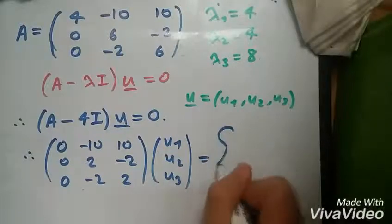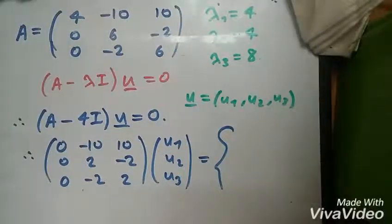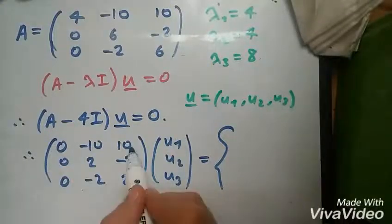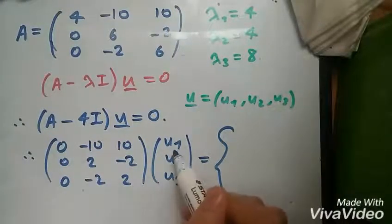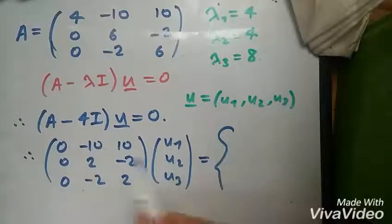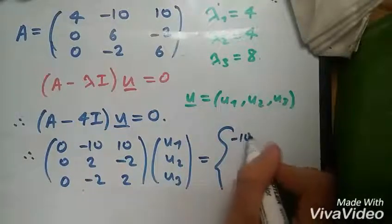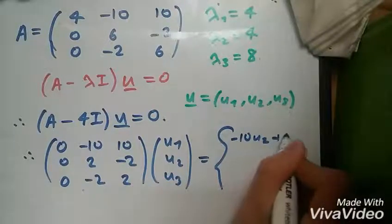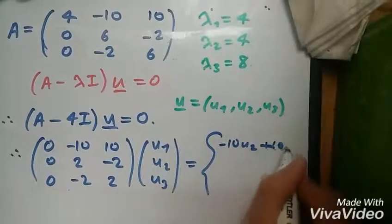So let's do this. How do we calculate this? Well, we multiply across, and we do this row times this column. So basically, 0 times u1 is 0, minus 10 times u2 is minus 10u2, 10 times u3 is plus 10u3, and all of this...